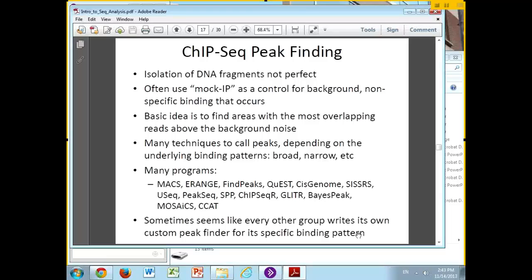For anyone who's done chromatin immunoprecipitation, you know that isolation of DNA fragments is not perfect. You've always gotten some amount of non-specific stuff that's come through. Often done in ChIP-Seq experiments, you'll do the mock IP, where you go through the exact same procedure except you leave out the antibodies, just to see what fragments of DNA will non-specifically stick to your beads.